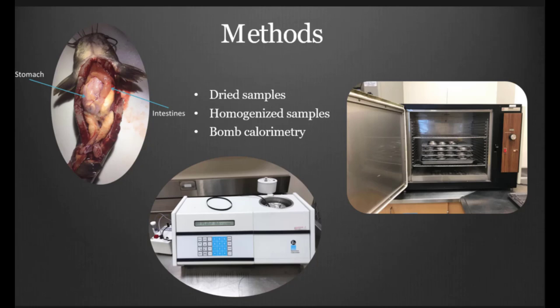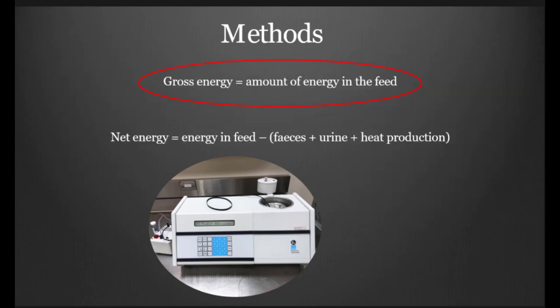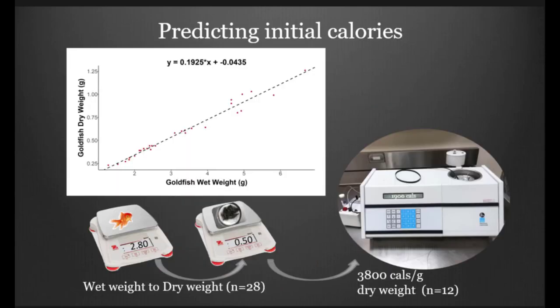For our project, we took the stomach and the intestine samples that we gathered from the gastric evacuation rate chapter, and we went ahead and dried them in a drying oven for 72 hours. We homogenized the sample into a powder, and then we actually compressed them in preparation for bomb calorimetry. We actually got the kilocalories remaining within those samples. The bomb calorimeter is actually just a measure of gross energy. This is not incorporating energy losses due to feces, due to urine, or heat production, which is considered net energy. That's just important to keep in mind here.